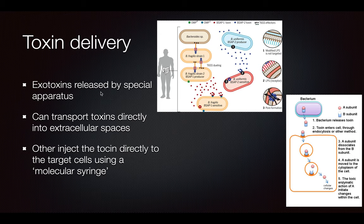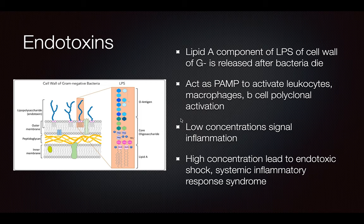The exotoxin is going to be delivered by a special apparatus — like a needle basically — and it transports the toxins directly into the extracellular spaces. The other type injects toxins into the target cell using a molecular syringe, which works more like a plunger. The beta subunit binds to the host cell, then gets endocytosed. Regarding endotoxins, the lipid A component of the LPS of the cell wall of gram-negative cells is released after the bacteria die, and that acts as the pathogen-associated molecular pattern to activate leukocytes, macrophages, and B cell polyclonal activation.